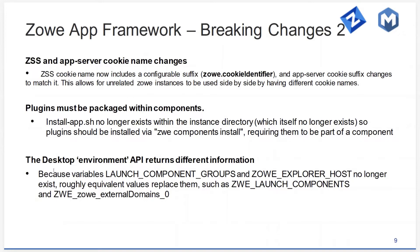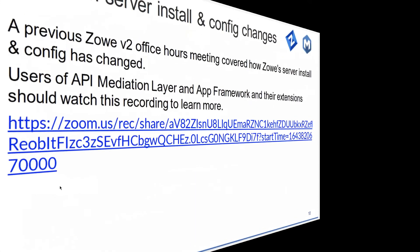Also, when some environment variables changed, that did affect the desktop environment API. That API can tell you some things in the browser about what's going on on the server, such as what components exist. The way in which we get that information has changed in V2. Although this environment API still gives you about the same information, the actual names of the values have changed — for example, ZOE Explorer host no longer exists; instead you have a parameter called ZOE external domains.